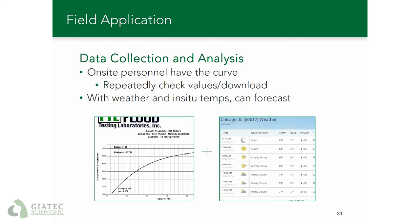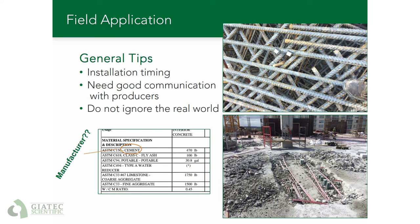Once the sensors have been installed and the concrete has been placed, it is time to start collecting the data and making it useful. Typically, on-site personnel have a copy of the calibration curve to reference and make decisions. One of the big advantages of the maturity method is the ability to forecast strength. For example, if the maturity shows that another 200 or 300 TTF maturity is needed to reach the target strength, by assuming a future temperature and knowing the current temperature, you can determine a fairly accurate estimation. For a large mass placement, especially if sensors need to be placed at a specific location such as the center of mass, you may only have two or three days ahead of time, which needs to be planned in advance.